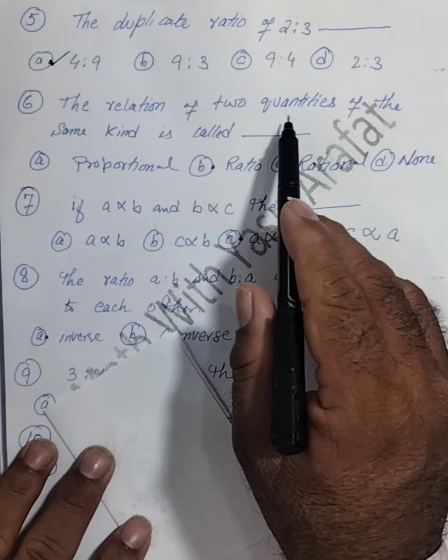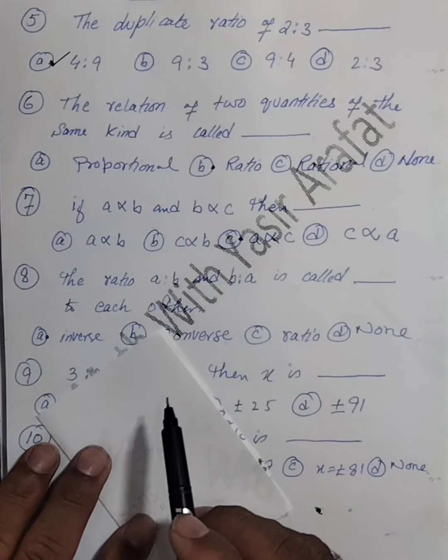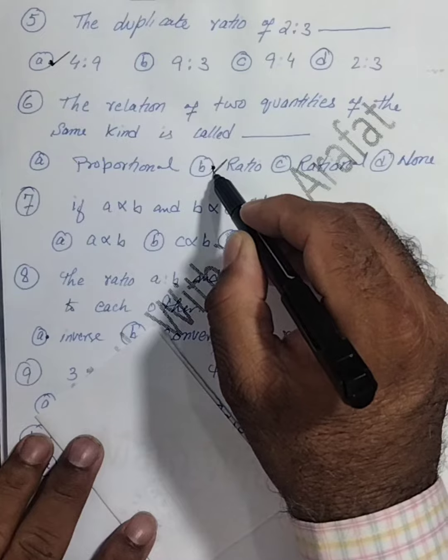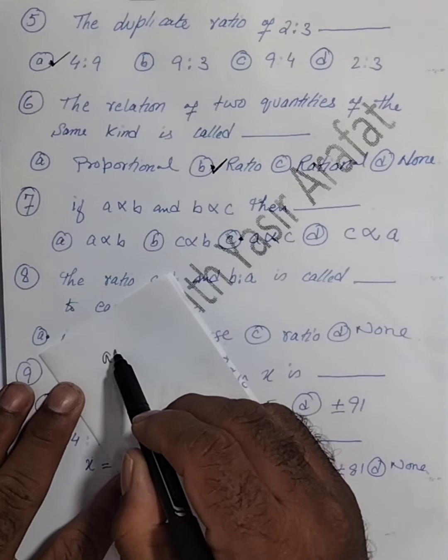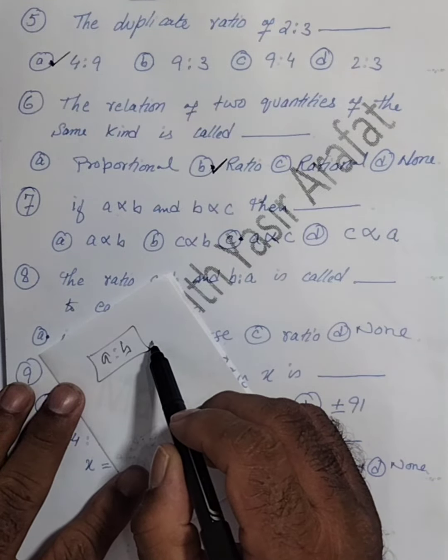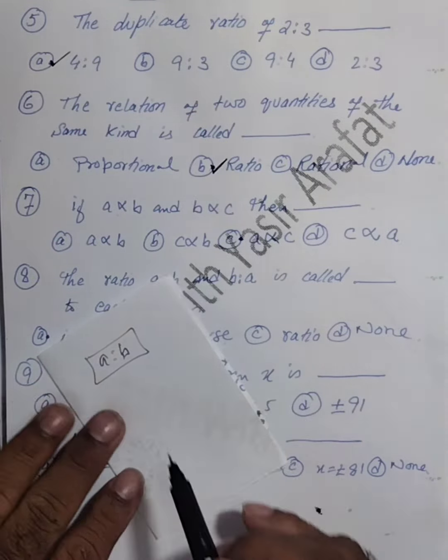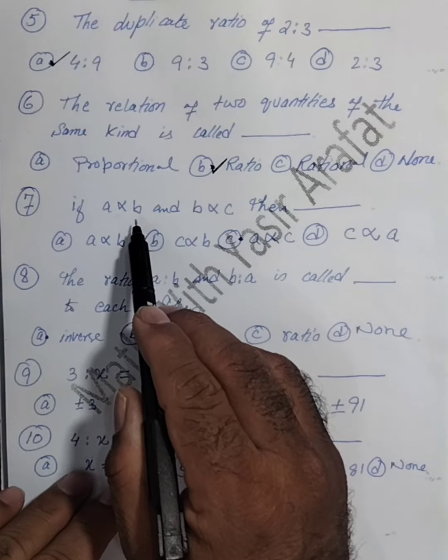Now the relation of two quantities of the same kind is called ratio. That is called ratio, same kind. For example, if we are going to discuss a ratio b, so their unit should be same or the commodity should be same. So this is called the ratio.